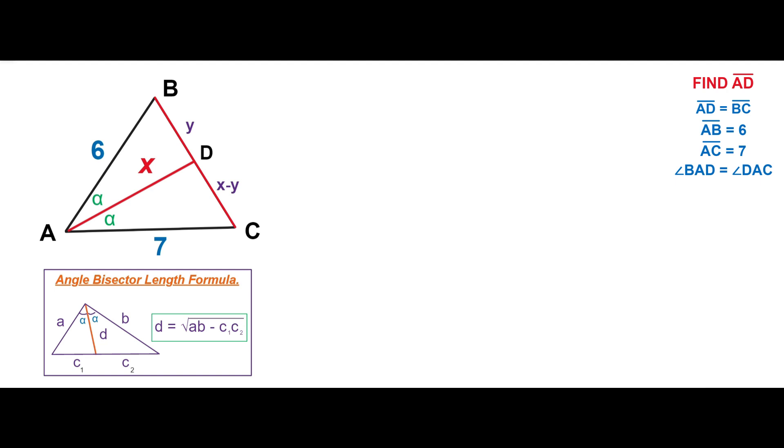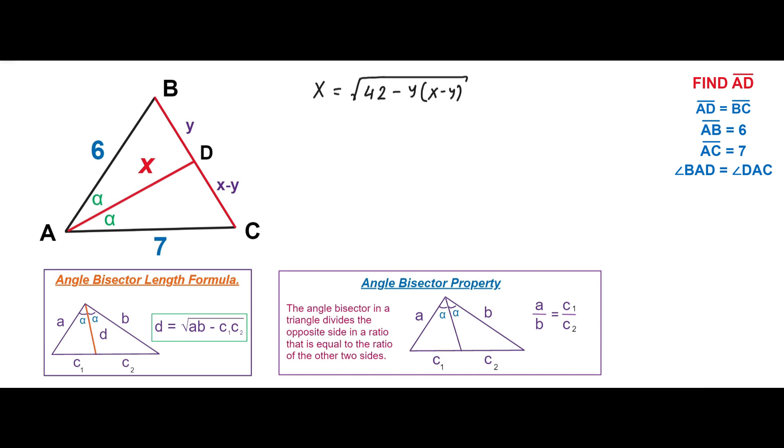Using the angle bisector length formula we can write the first equation. In order to obtain the second equation we need to refer to the angle bisector property. The angle bisector in a triangle divides the opposite side in a ratio that is equal to the ratio of the other two sides. In our case we can write the second equation using this property.